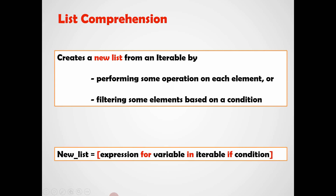See the format of the list comprehension. Since we are getting a new list, the entire statement must be in square brackets. This statement begins with an expression, then we need to use the keyword 'for', after that a variable, then the keyword 'in', and then we mention the iterable. We can also use an optional keyword 'if' with a condition. This is the entire format of the list comprehension, which will generate a new list that we can store in a variable.